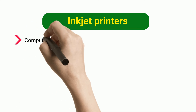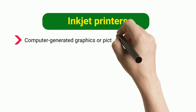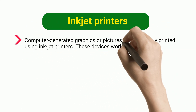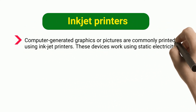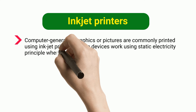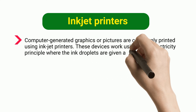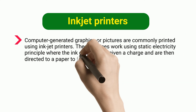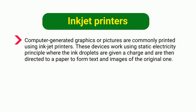Computer-generated graphics or pictures are commonly printed using inkjet printers. These devices work using the static electricity principle, where ink droplets are given a charge and are then directed to paper to form text and images.